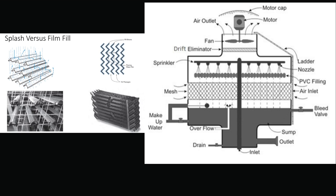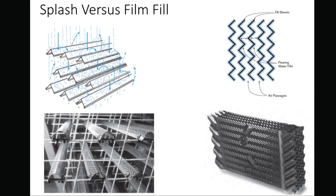Fill can either be splash or film type. With splash fill, water falls over successive layers of horizontal splash bars, continuously breaking into smaller droplets while also wetting the fill surface. Plastic splash fill promotes better heat transfer than wood splash fill. Film fill consists of thin, closely spaced plastic surfaces over which the water spreads, forming a thin film in contact with the air. These surfaces may be flat, corrugated, honeycombed, or other patterns. Film fill is more efficient and provides the same heat transfer in a smaller volume than splash fill.